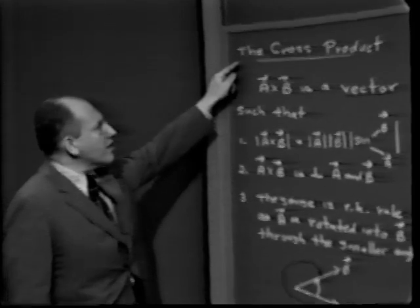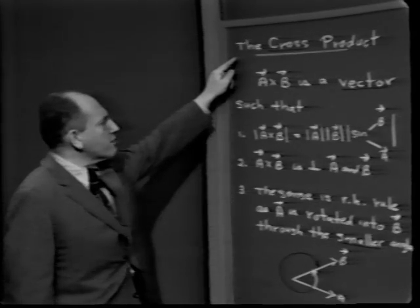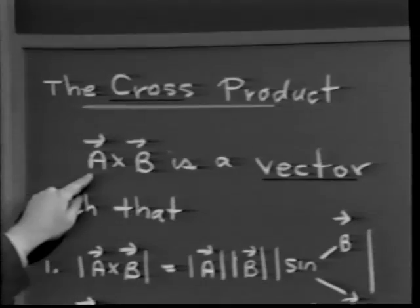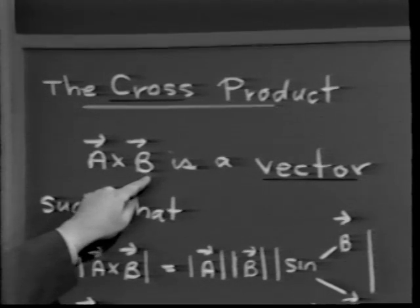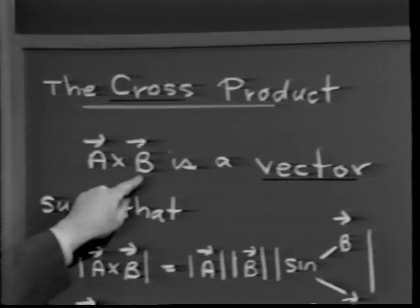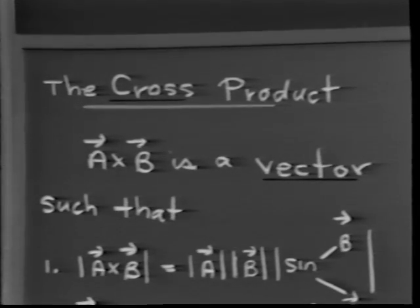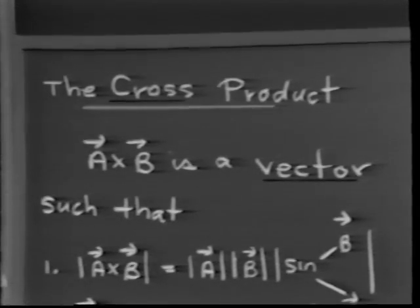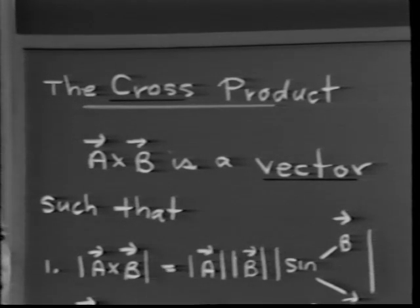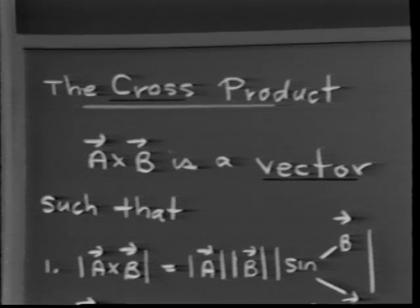What I want to do is get to the crux of the situation. If a and b are vectors, by a cross b we mean a vector. As soon as I say vector, to define it I have to tell you three ingredients: magnitude, direction, and sense.